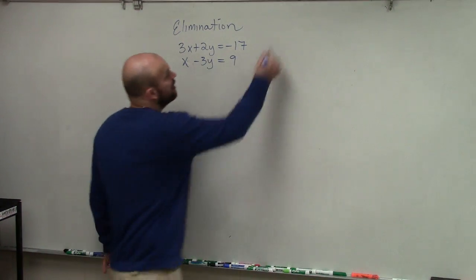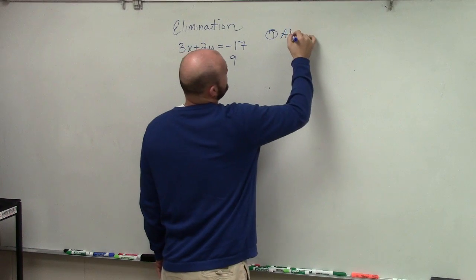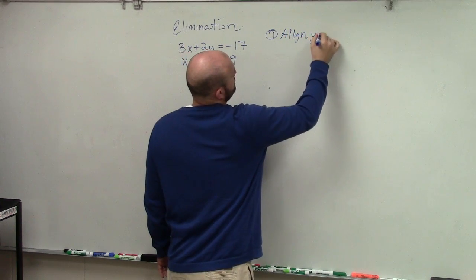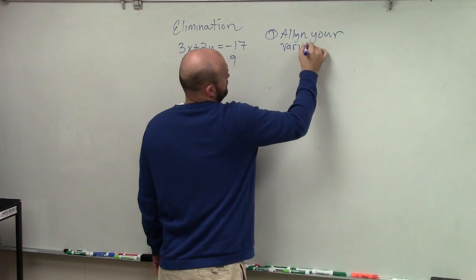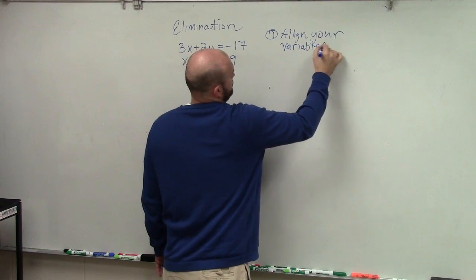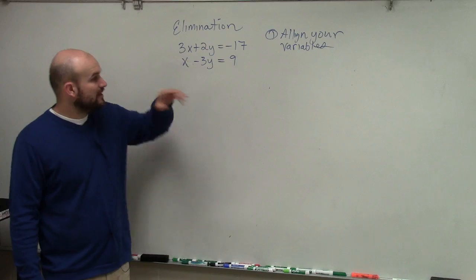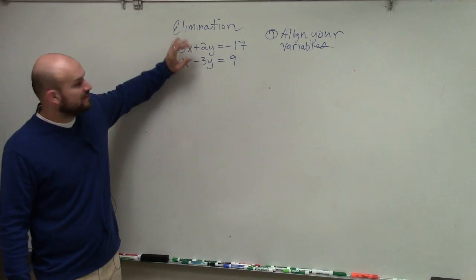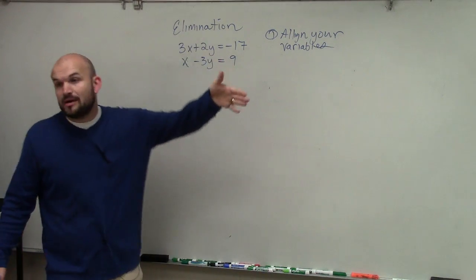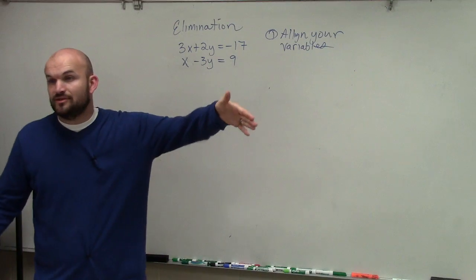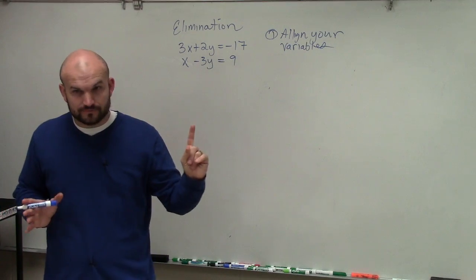So let's go through the steps. The first step is going to be: align your variables. If you guys look up here, you can see that the variables are aligned — x is over the x, y is over the y. Some of the problems you might get, the variables are not aligned, so you're going to want to make sure that's the first thing you do.